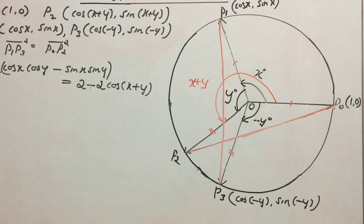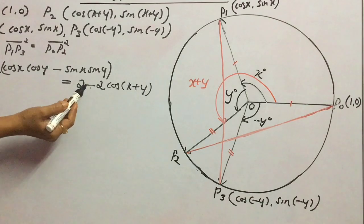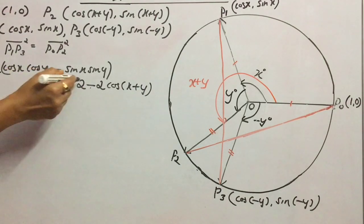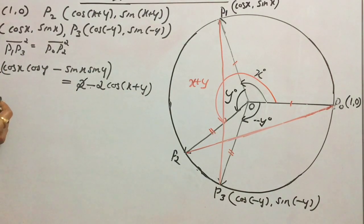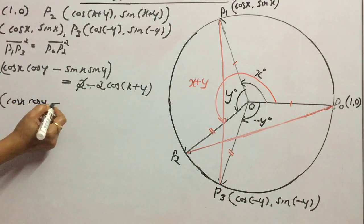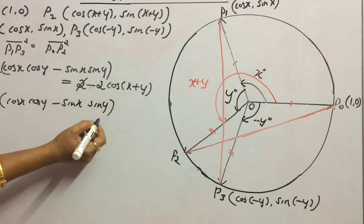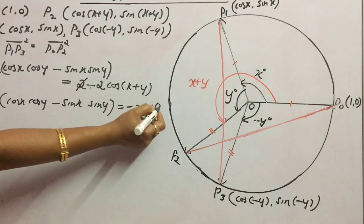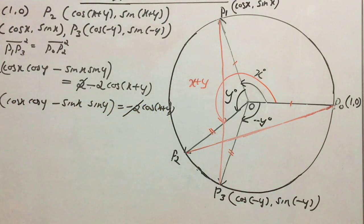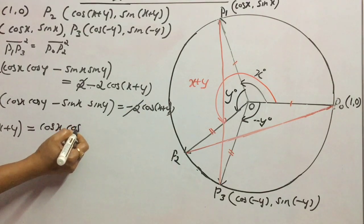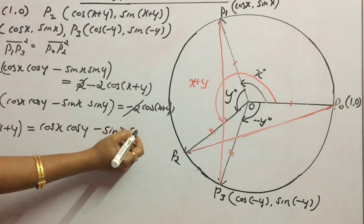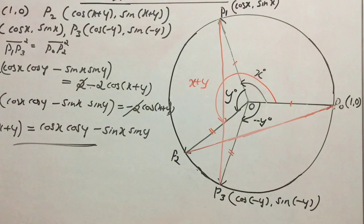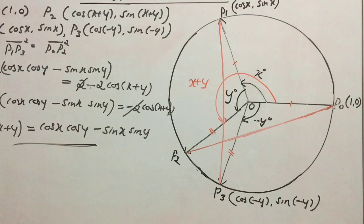Combining equation 1 and equation 2, we get: 2 − 2(cos x cos y − sin x sin y) = 2 − 2 cos(x+y). Dividing both sides by −2 and simplifying, we arrive at cos(x+y) = cos x cos y − sin x sin y, which is the result we needed to prove. Thank you.